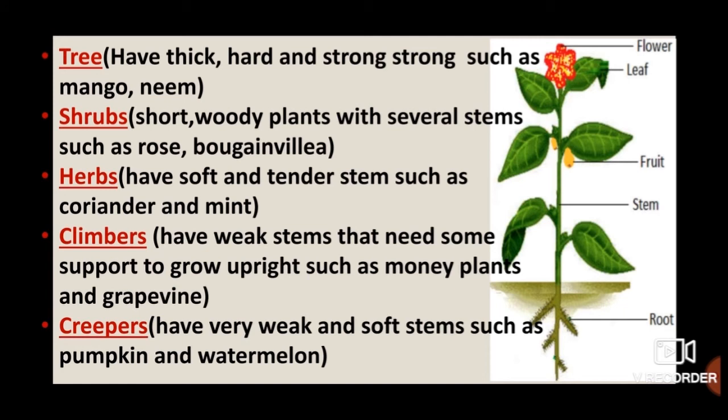Climbers are plants with weak stems that need some support to grow upright, for example money plant. Pumpkin and watermelon plants have very weak and soft stems. These plants creep along the ground as they grow and are called creepers.